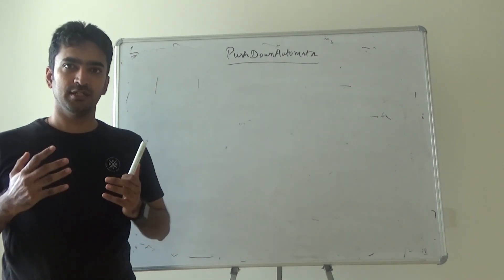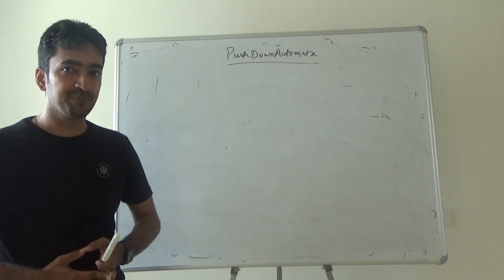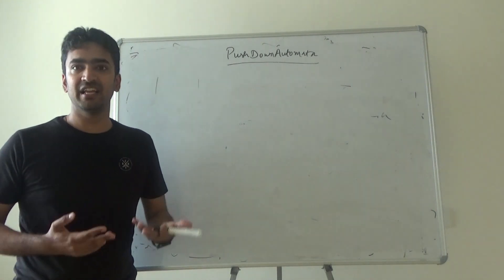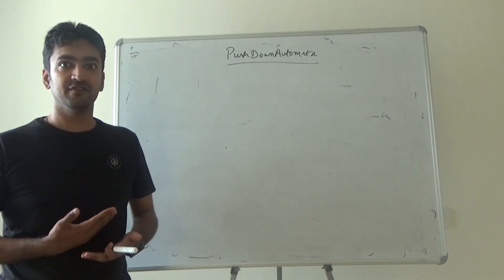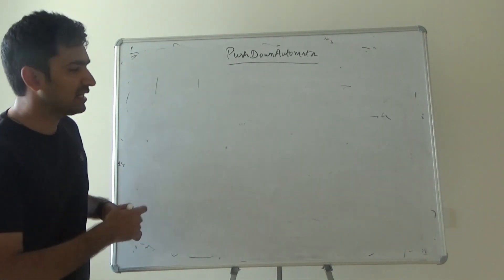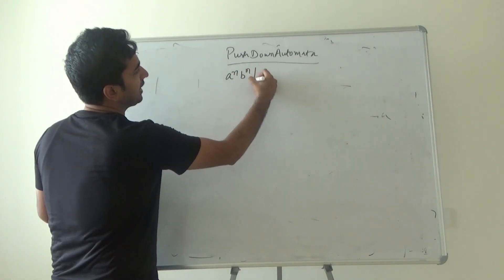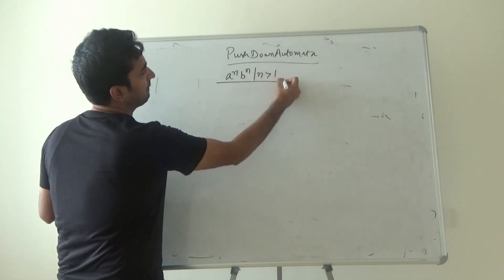Since your finite automata did not accept some certain languages like a contextual language and it was not accepting contextual grammar either. The best example of that was a bar and b bar n greater than 1.